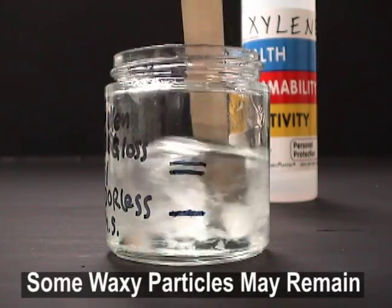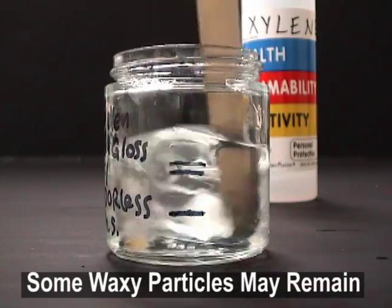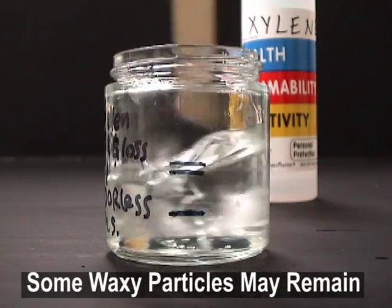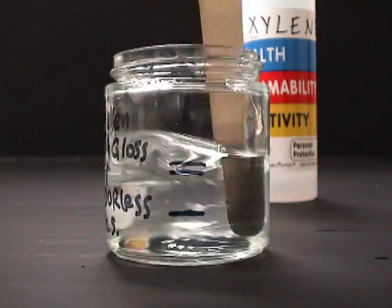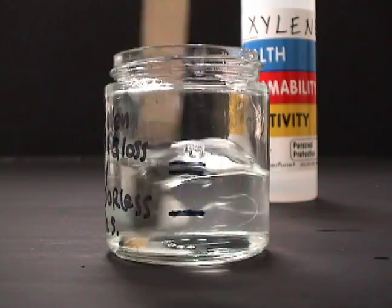There may be some residual wax-like lumps that resist mixing out. Cap the mixture and allow it to sit for at least 3 hours. This allows any residual waxy lumps to either dissolve or settle.